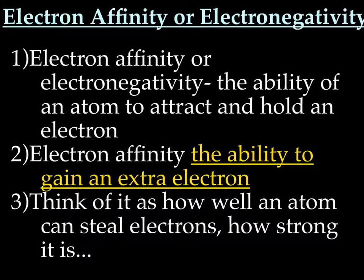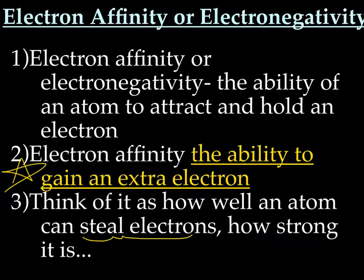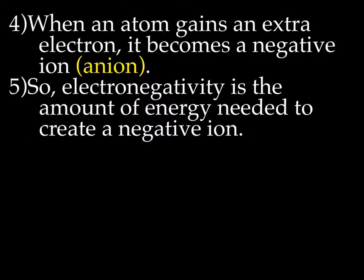Let's discuss electron affinity or electronegativity. Electronegativity is the ability of an atom to attract and hold an electron — the definition is the exact opposite of the definition of ionization energy. Electron affinity is the ability to gain an extra electron. I like to think of it as how well an atom can steal electrons. When an atom gains an extra electron, it now has more electrons than protons, so it becomes a negative ion known as an anion. You can think of electronegativity as the amount of energy needed to create a negative ion, and that means it's going to be adding electrons.